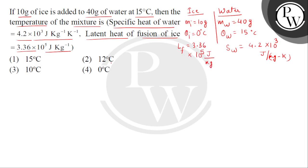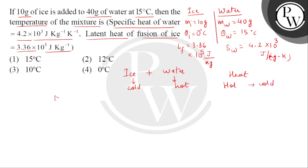We have to find the temperature of the mixture. When we mix ice and water, water is the hot body and ice is the cold body, so heat will flow from the hot body to the cold body. Here we can apply the principle of the calorimeter, that is the method of mixtures.